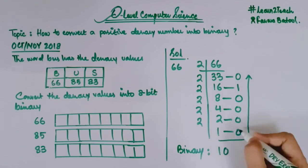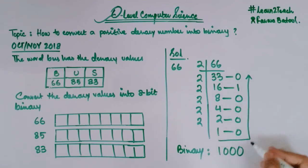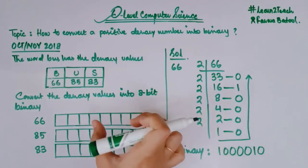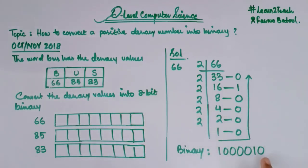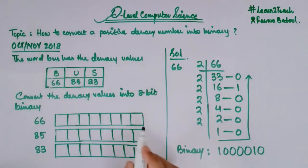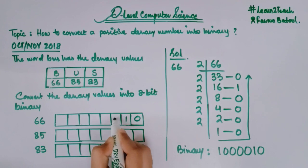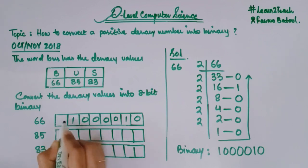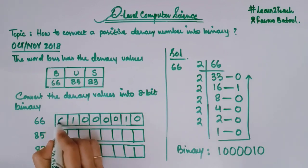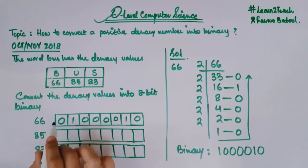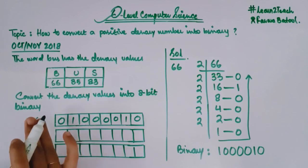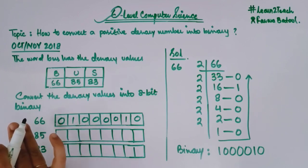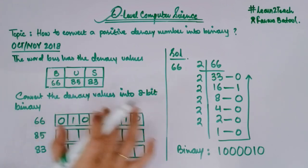Reading the remainders in reverse order: 1, 0, 0, 0, 0, 1, 0. Writing this into the 8-bit register from the least significant bit (LSB) moving left, we get: 0, 1, 0, 0, 0, 0, 1, 0. Since we have a bit position left, we write a 0 there because it makes no difference to the binary value. So 66 in 8-bit binary is 01000010.